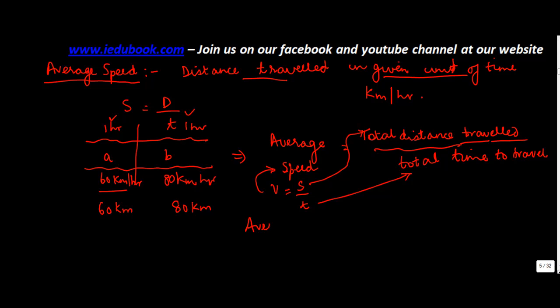So your average speed is equal to total distance travelled. What is the total distance? 60 plus 80 kilometer. And what is the time taken? 1 plus 1, 2 hours.